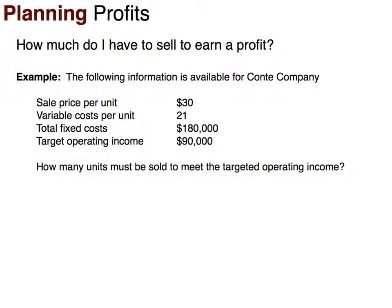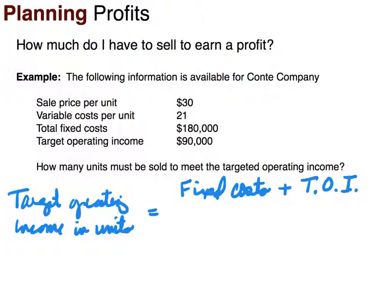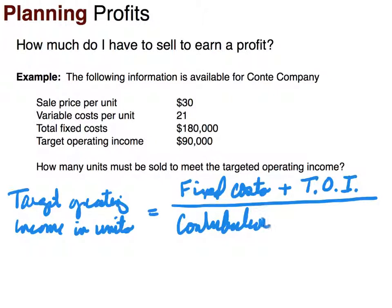The first equation we'll look at is target operating income in units. This equation is going to be fixed costs plus target operating income — so whatever target operating income you want, $10,000 profit, $20,000, whatever it happens to be — you add that to your fixed costs in the numerator, and divide by the contribution margin per unit. Since we want the answer in units, we divide by the per-unit figure.